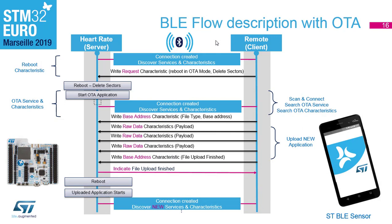Looking at the OTA flow with the heart rate example: the phone sees the advertising and knows it supports OTA. When it connects, it discovers the OTA reboot characteristic and writes to it, generating a reset. The OTA application boots, erases the specified flash area, then starts advertising again. The phone reconnects, raw binary data is exchanged and stored in flash. Once done, the target sends an indication, another reset is generated, OTA reboots, finds a valid application, and bypasses itself.